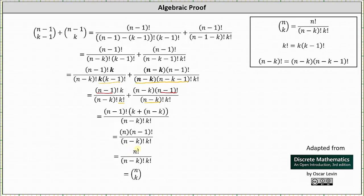So now we have n factorial divided by the product of n minus k factorial and k factorial, which is equal to n choose k, which is what we were trying to prove. I hope you found this helpful.